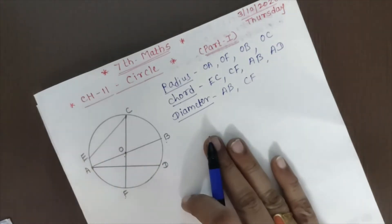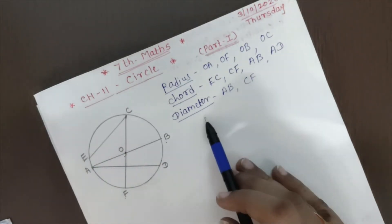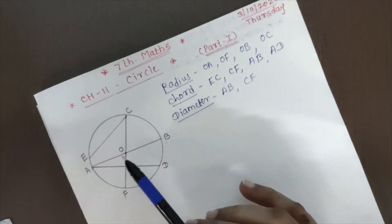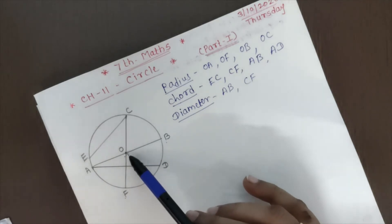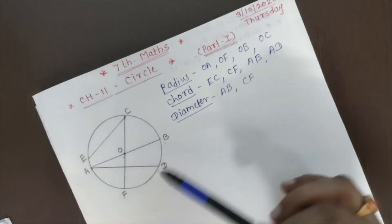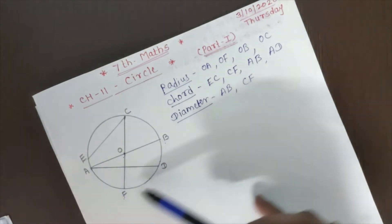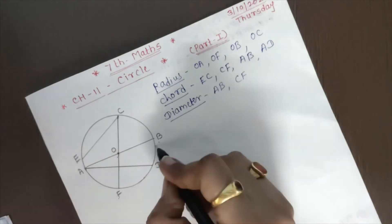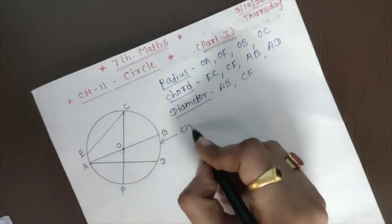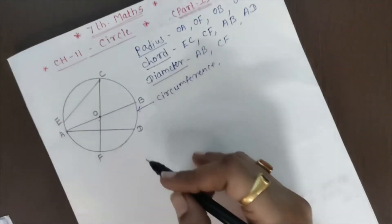So do you understood up to this? What is radius? What is chord? What is diameter? What is the center of the circle? Here, point O is the center of circle. And the boundary of a circle is called the circumference of a circle.